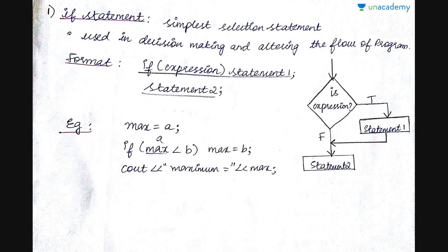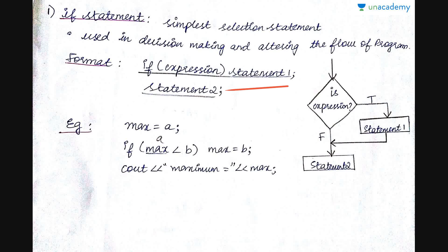Looking at the flowchart: if the expression is true, statement one gets executed; if it is false, statement two gets executed directly. Even if the expression is true, after statement one executes the flow goes to statement two. So statement two is mandatory — it gets executed whether the expression is true or not. Statement one gets executed only if the expression is true.